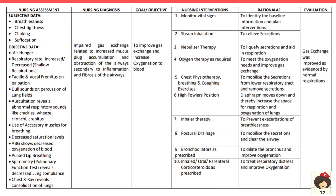The patient cannot breathe normally through the nose and may breathe through pursed lips. Spirometry (pulmonary function test) shows decreased lung compliance. Chest X-ray reveals consolidation and pulmonary infiltrates. The goal is to improve gas exchange and increase blood oxygenation. Interventions: monitor vital signs — note shallow respirations. Suctioning relieves secretions and prevents mucus plug impaction so oxygen can enter. Nebulizer therapy liquefies and removes secretions.